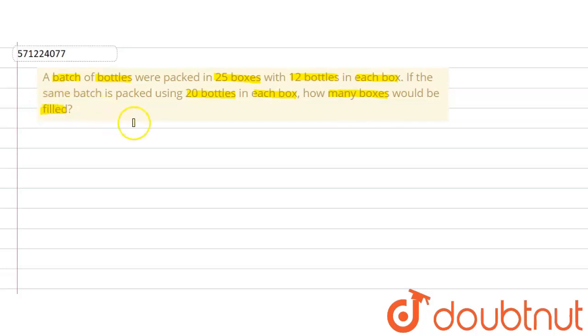So the question is how many boxes would be filled if 20 bottles are kept in each box instead of 12 bottles in each box, where the condition is that the batch of bottles is same, that means total bottles are same.